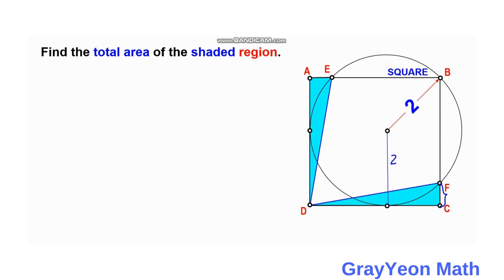Next, we draw another line from the center of the circle to corner D of the square and from E downwards. This will intersect at a point, and from that point to F it will be a horizontal line. Notice that this length FC is also the same as this length, and it is also the same as this length.